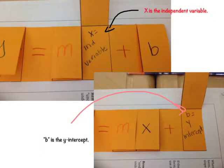Under the X flap, I wrote independent variable, and the B flap is that B stands for the Y intercept.